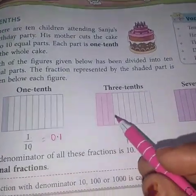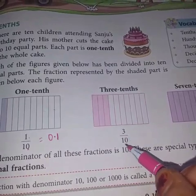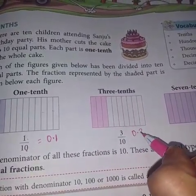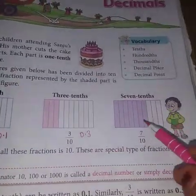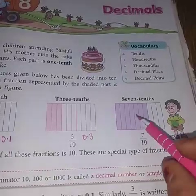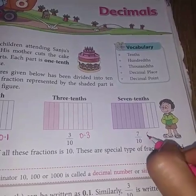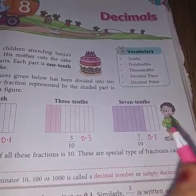Here out of 10 pictures, 3 is shaded. So we will write down 3 upon 10. This is a fraction. And when we write it in point form, then it is called decimal number. Same here, it is divided into 10 parts and 7 is shaded. So it is said as 7 upon 10, or if we write it as 0.7, then it is decimal number.